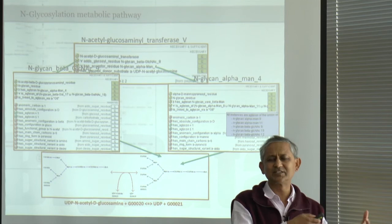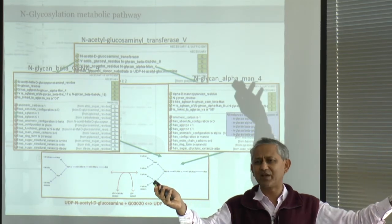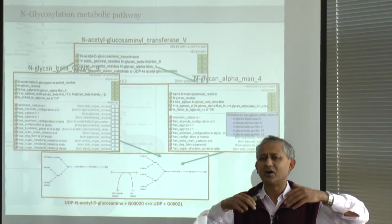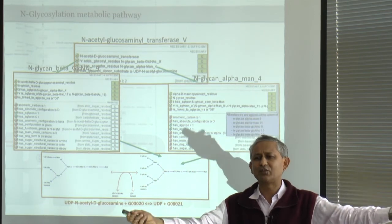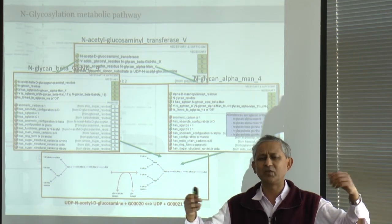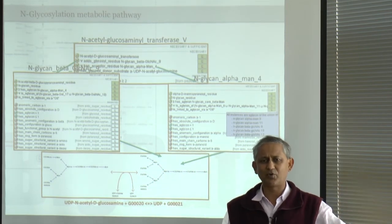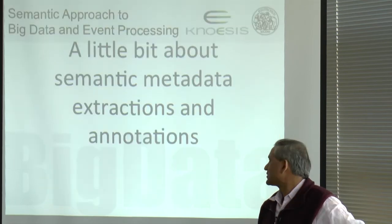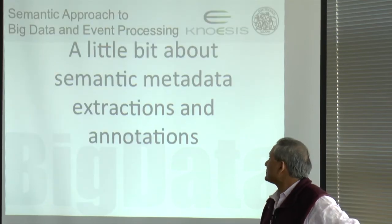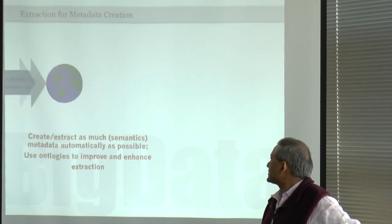You use tools like Protégé for designing ontologies to develop this kind of thing. As opposed to a knowledge graph about content on the web and for searching data like what you find in Wikipedia — that is far broader-based and you can use a lot more automation. Let us look at a bit about semantic metadata extraction and annotations.